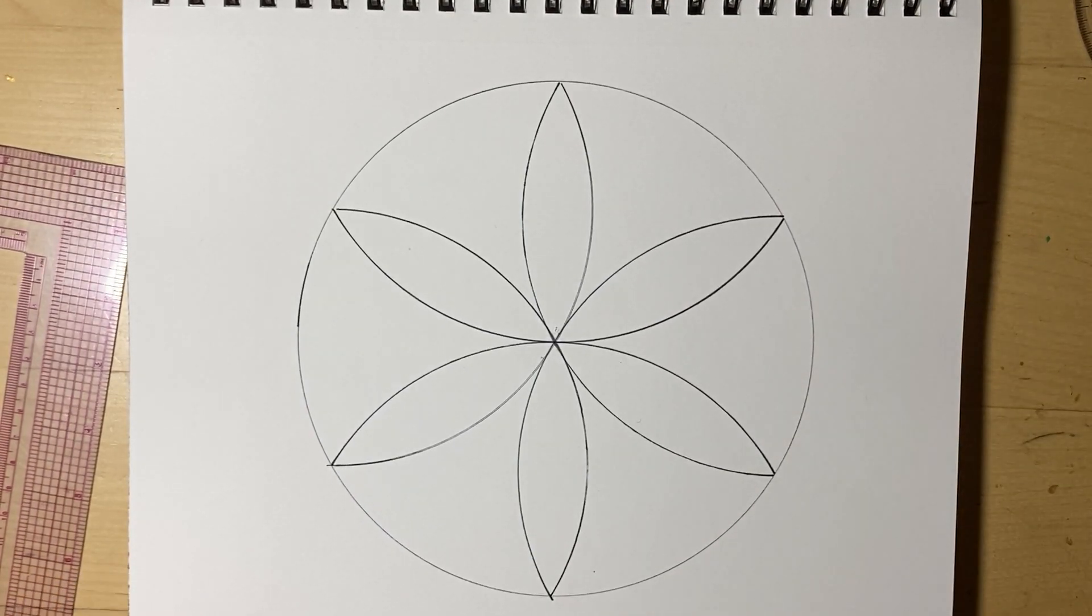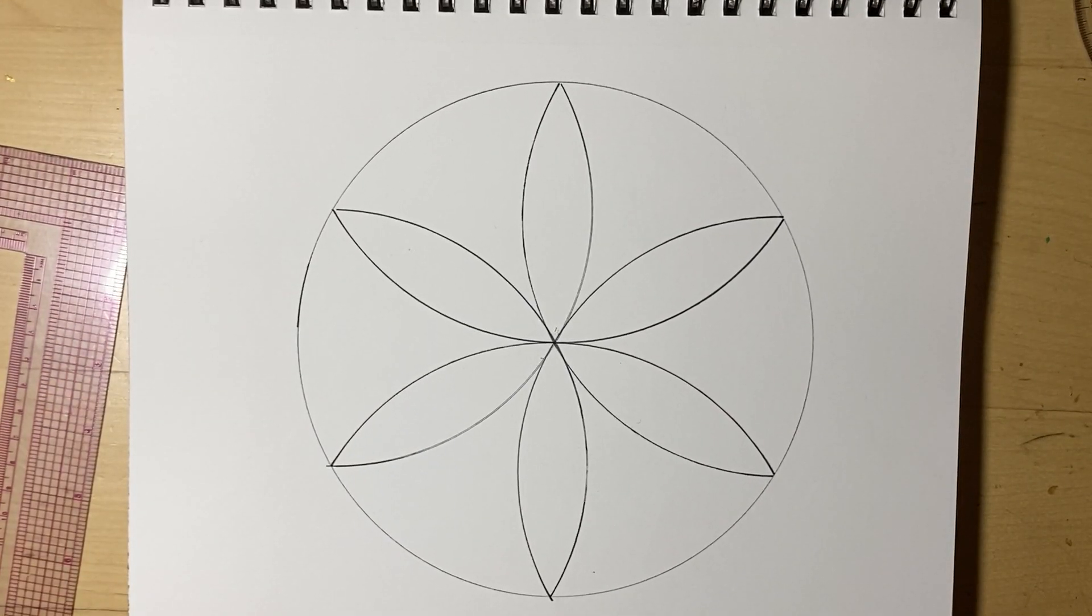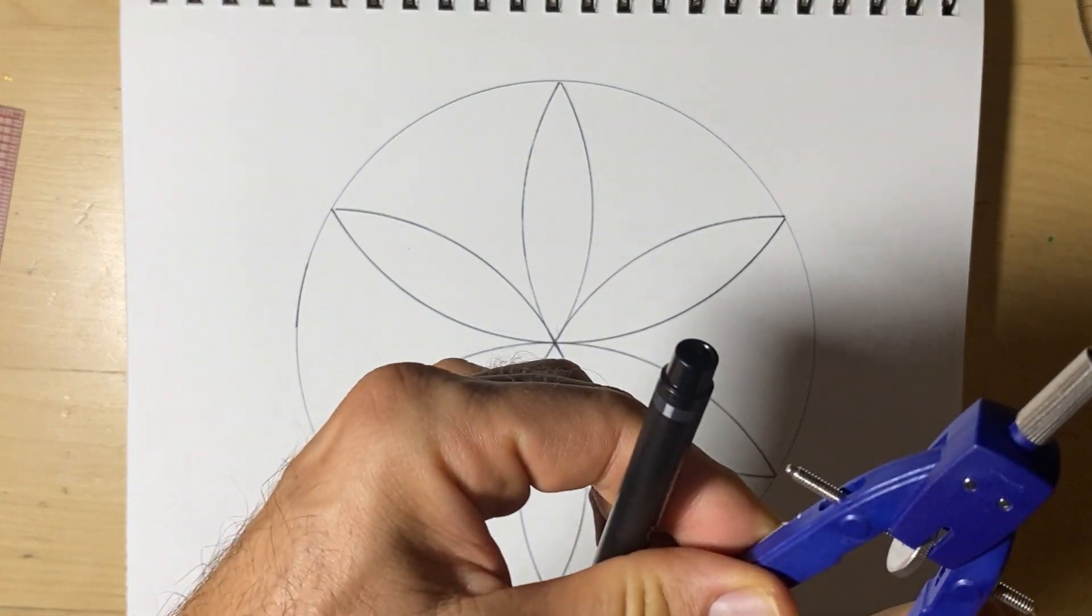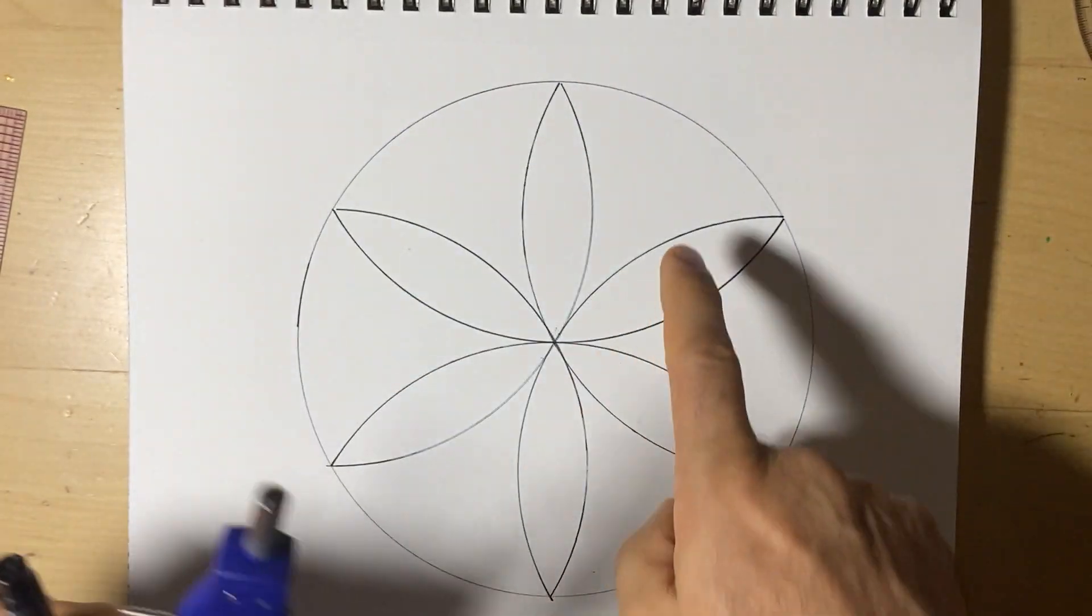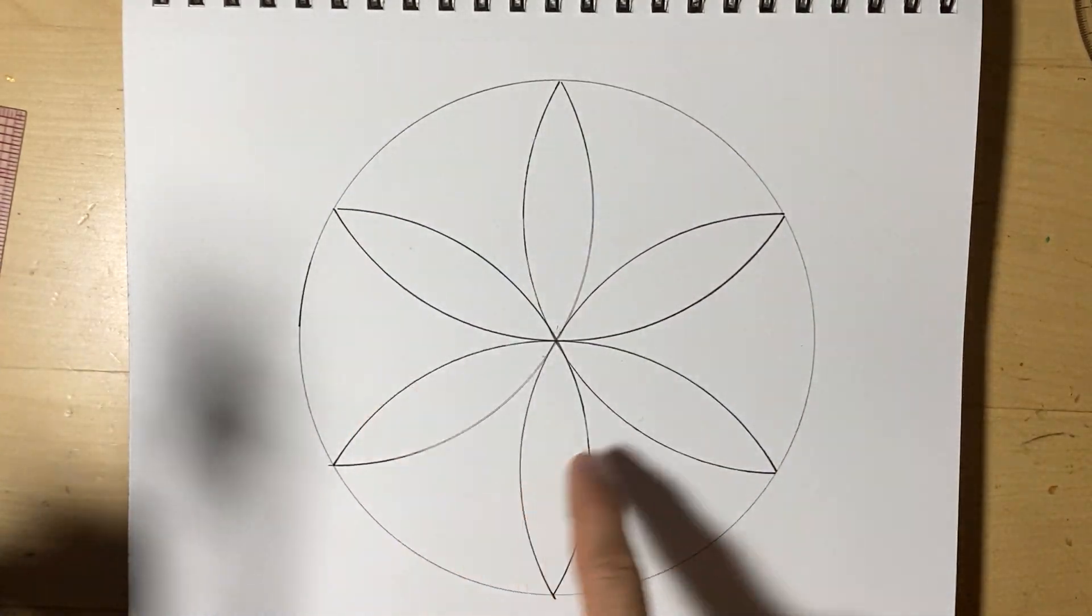So the next step, I'm going to use a marker just so that it shows up better on the video. But really, you would want to use a pencil because this next little thing we're going to erase under normal circumstances. We want to find the middle in between these two petals, or really any of them.